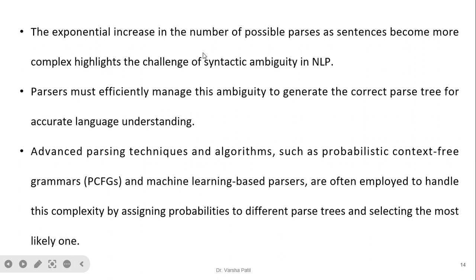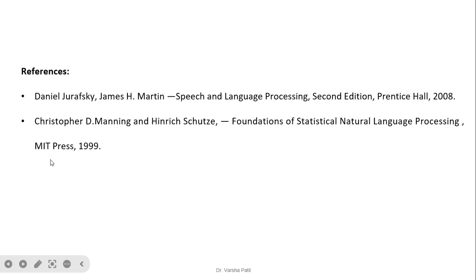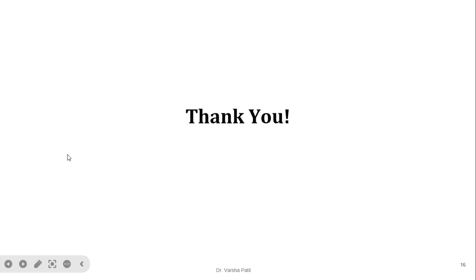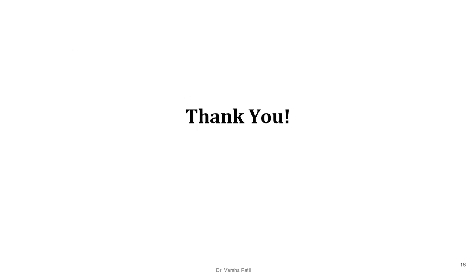The exponential increase in the number of possible parses as sentences become more complex highlights the challenge of syntactic ambiguity in NLP. Parsers must efficiently manage this ambiguity to generate the correct parse tree for accurate language understanding. Advanced parsing techniques such as probabilistic context-free grammar — PCFG — and machine learning-based parsers are often employed by assigning probabilities to different parse trees and selecting the most likely one. In the next video I will explain constituency modeling, top-down and bottom-up parsers in detail, context-free grammar, and Chomsky Normal Form. Thank you.